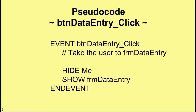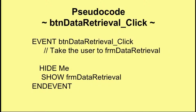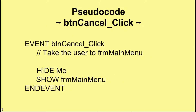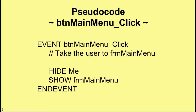The next event, button data retrieval click, is in the same format — it hides the main menu and shows the data retrieval form. Similarly, button cancel hides the data entry form and shows the main menu form. And button main menu click takes the user from the data retrieval form back to the main menu: hide me hides the data retrieval form, and show main menu takes us back to where we started.